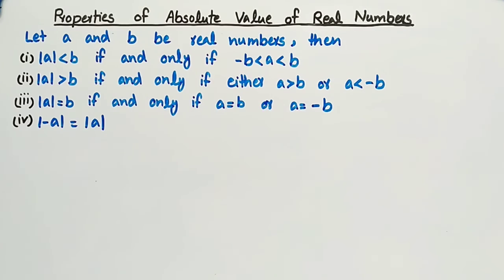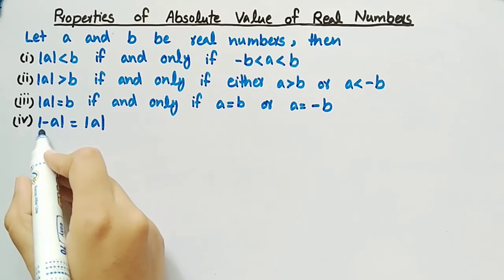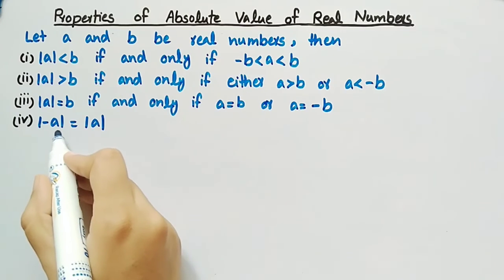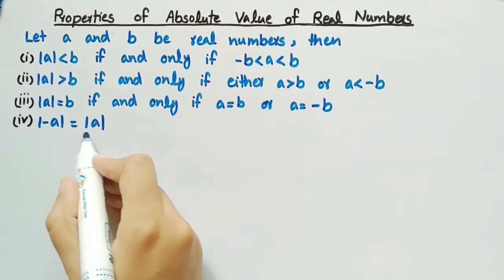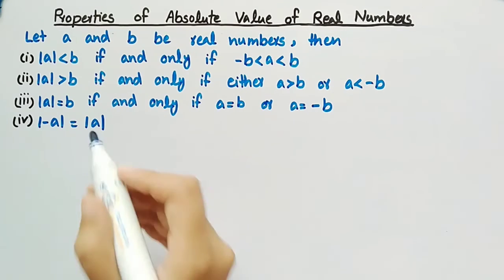The fourth property of absolute value of real numbers is: the absolute value of minus A is equal to the absolute value of A.